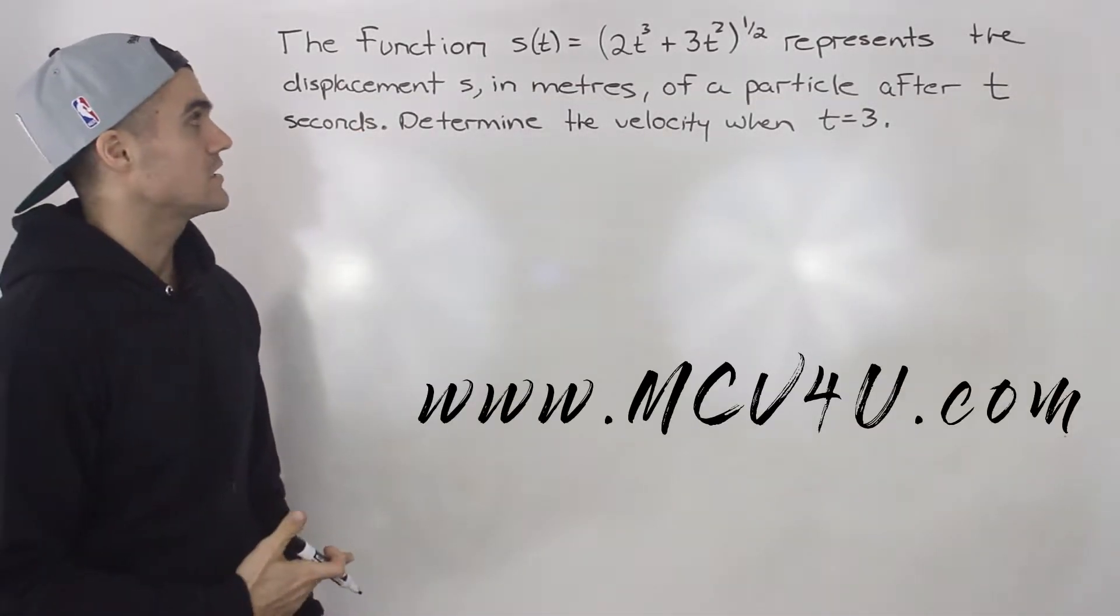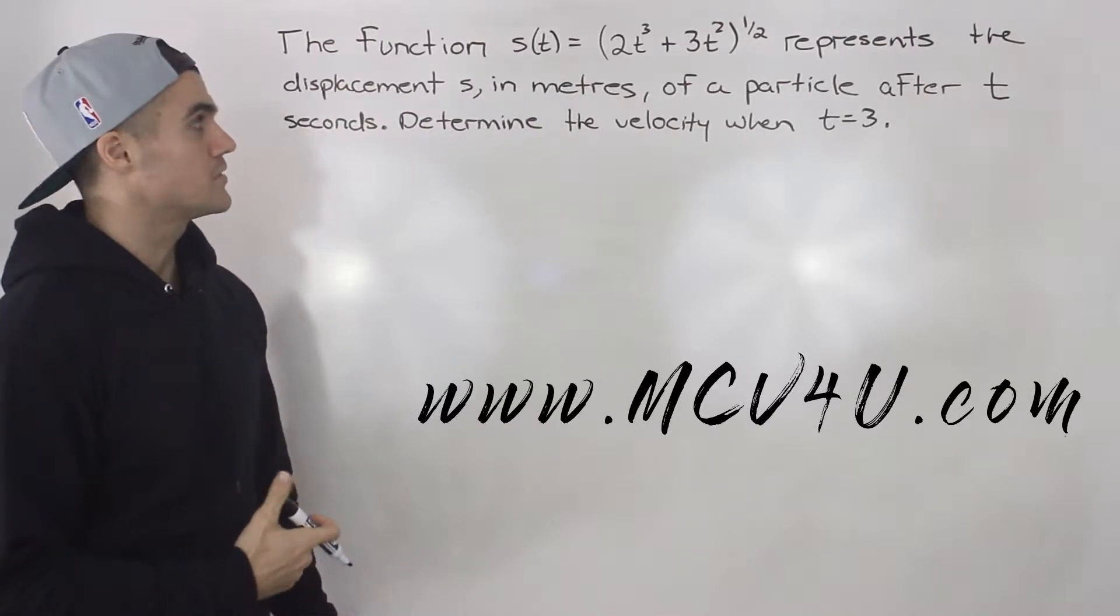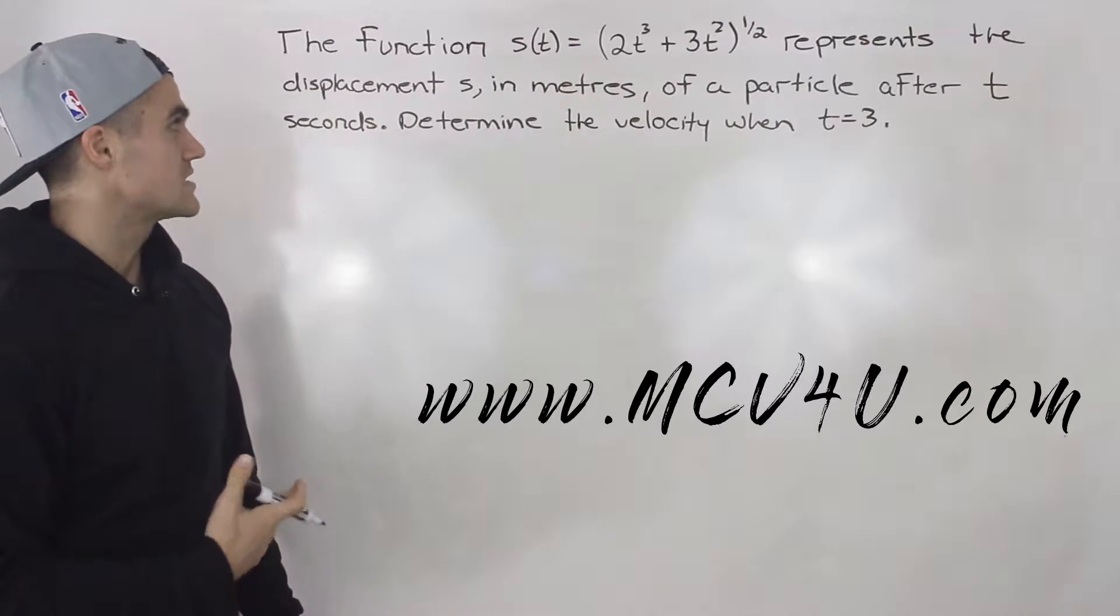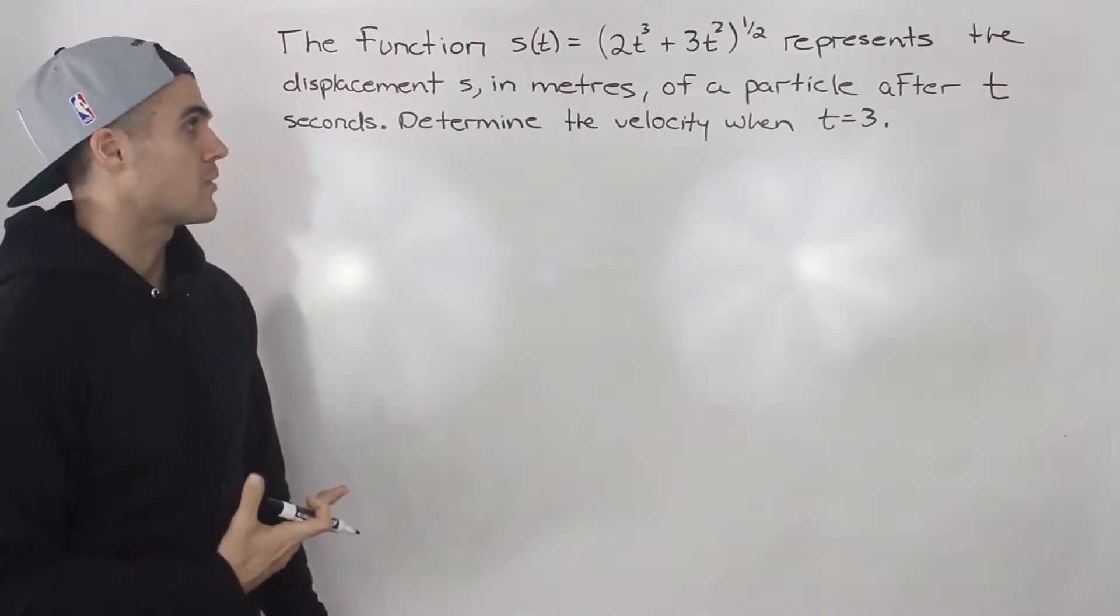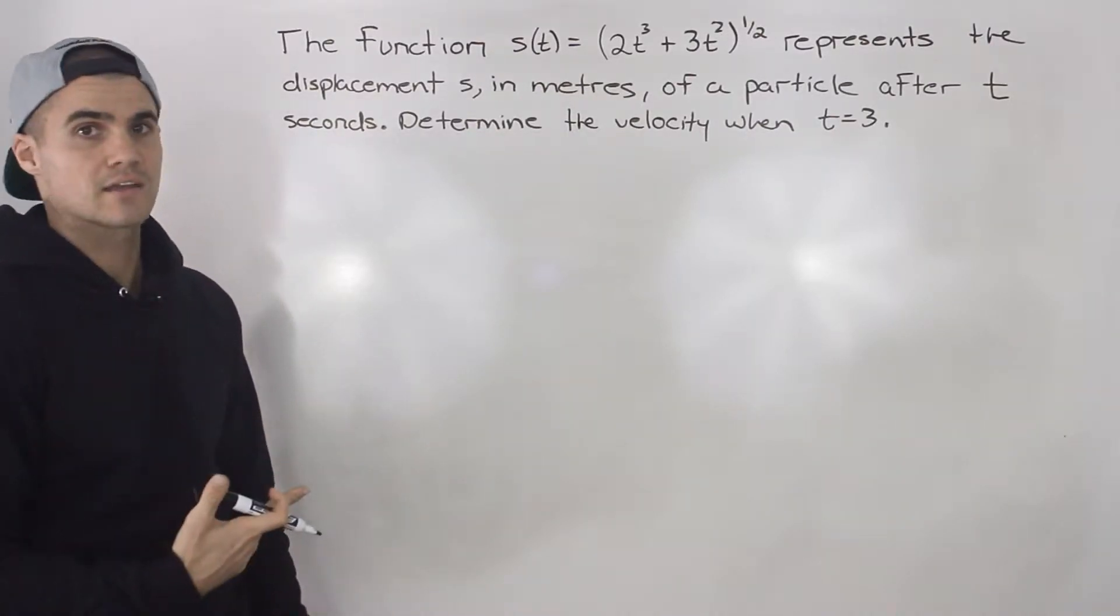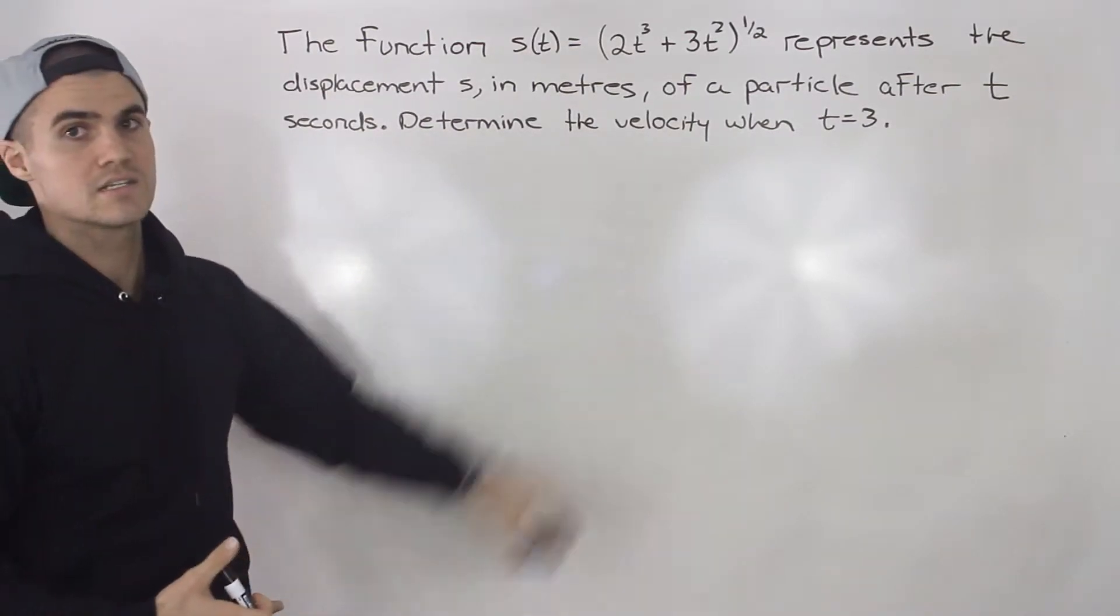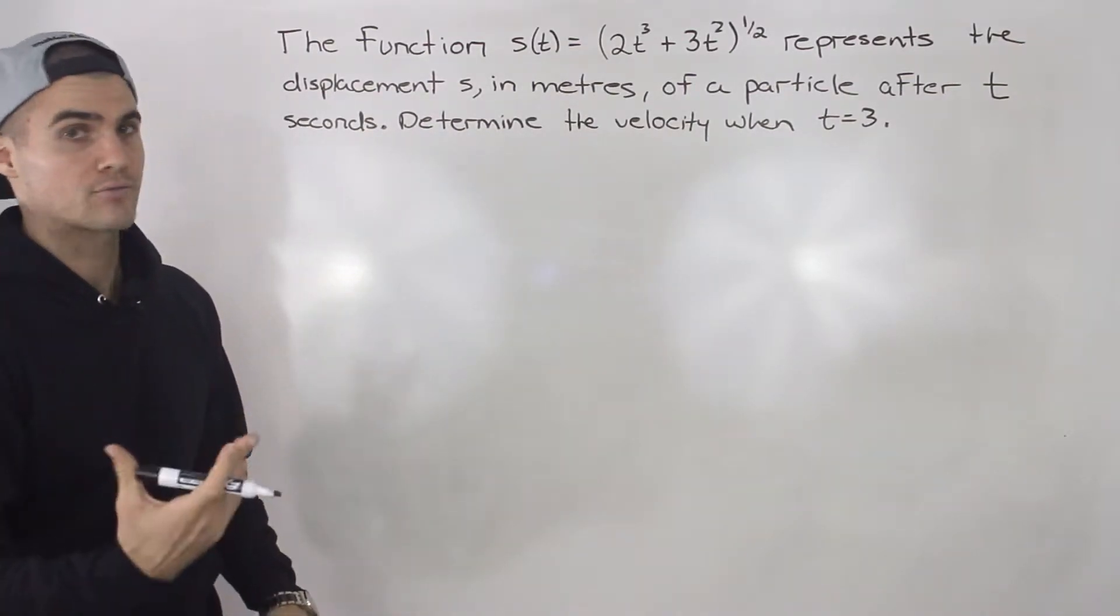We have a function s(t) equals (2t³ + 3t²)^(1/2) and that represents the displacement s in meters of a particle after t seconds. We have to determine its velocity when t is equal to 3, or at 3 seconds.